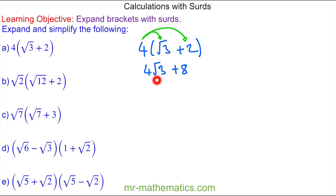Because root 3 has no square factors, this is as simple as it can be written. So our answer is 4 root 3 plus 8.